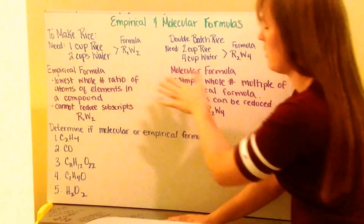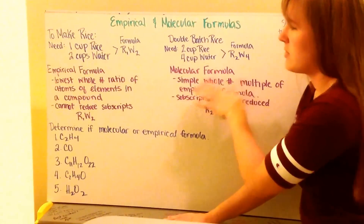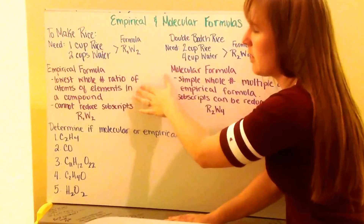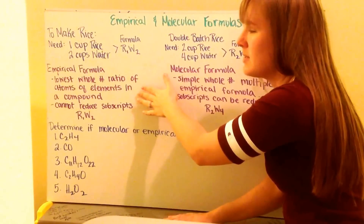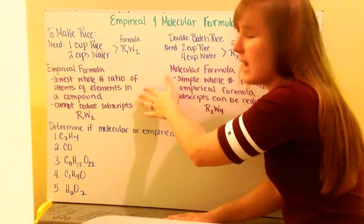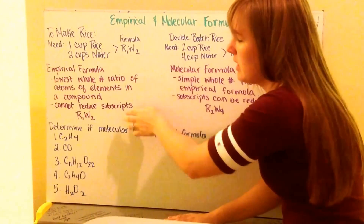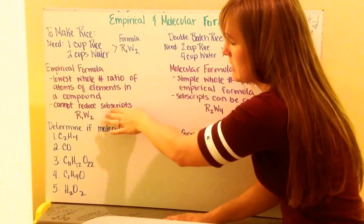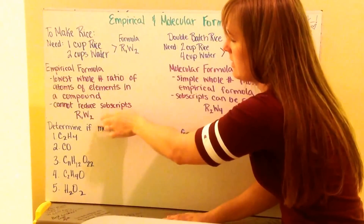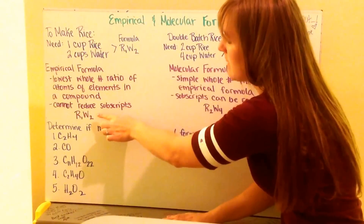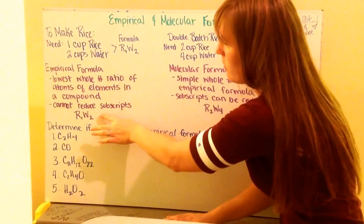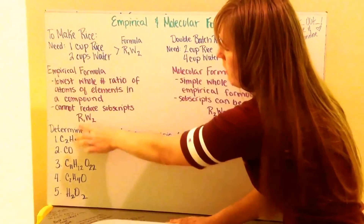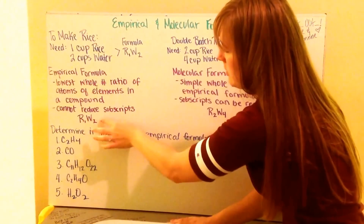This leads into empirical and molecular formulas. My empirical formula is my whole number ratio of atoms of elements in a compound. This cannot be reduced — I cannot reduce my subscripts on this. So this is like my normal rice recipe of one cup of rice, two cups of water: R1W2.